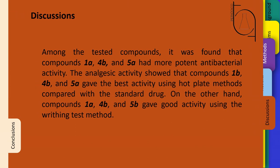Discussions: Among the tested compounds, it was found that compounds 1A, 4B, and 5A had more potent antibacterial activity. The analgesic activity showed that compounds 1B, 4B, and 5A gave the best activity using hot plate methods compared with the standard drug. On the other hand, compounds 1A, 4B, and 5B gave good activity using the writhing test method.